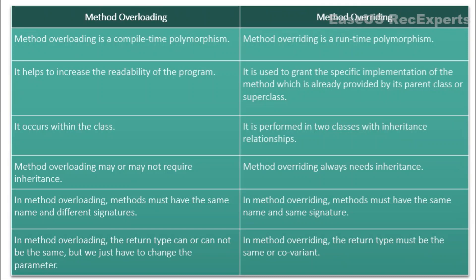Now let's discuss an important interview question: what is the main difference between method overloading and method overriding? Method overloading is compile time polymorphism; method overriding is runtime polymorphism — meaning method linking happens at compile time for overloading but at runtime for overriding. Method overloading increases readability of the program, as the same class can have multiple methods with different arguments. Method overriding is used to grant specific implementation of a method already present in the parent class. Method overloading happens within the same class, but method overriding must be performed between two different classes since inheritance is involved.